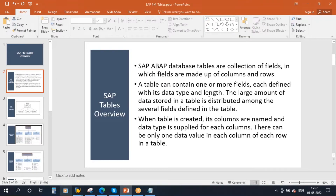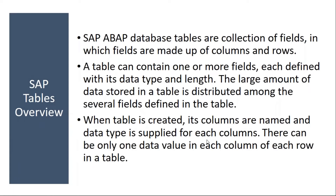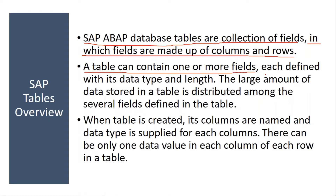First we understand what are these tables, and then we will see some of the important tables in plant maintenance module. The SAP ABAP database tables are a collection of fields in which fields are made up of columns and rows. These tables will contain columns and rows where the information is stored. A table can contain one or more fields, each defined with its data type and length.